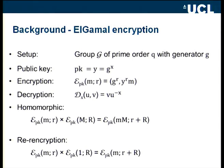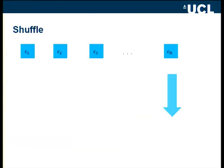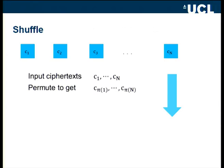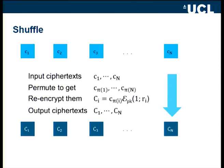We use this re-encryption to define a shuffle. We have a bunch of input ciphertexts, pick a permutation, permute the input ciphertexts, and then re-encrypt them by multiplying by an encryption of one. This gives us output ciphertexts. Because of re-encryption, the output ciphertexts look completely different from the inputs, and because we permuted them, we don't know which original input ciphertext belongs to which output ciphertext.